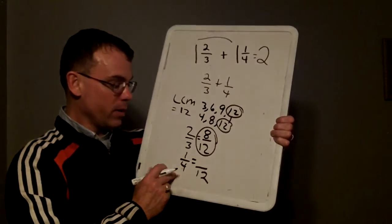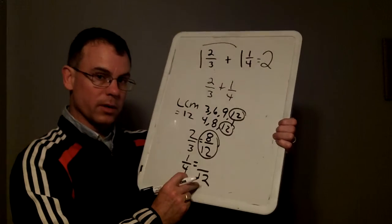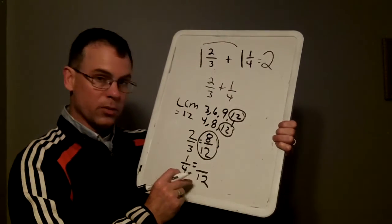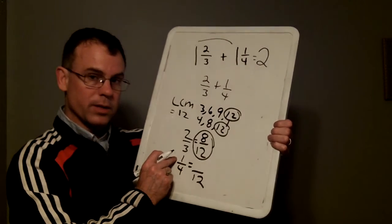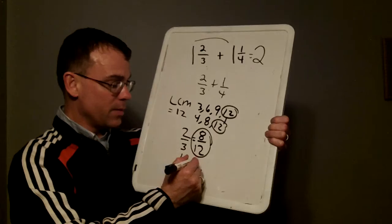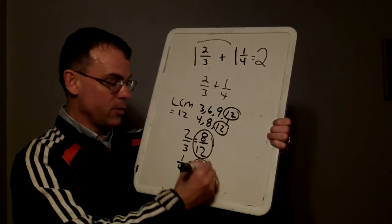If I look at one-quarter, what did I do to the four to turn it into a twelfth? Well, I multiply by three. If I do that in the bottom, I have to do that likewise to the numerator in the top. One times three would be three twelfths.